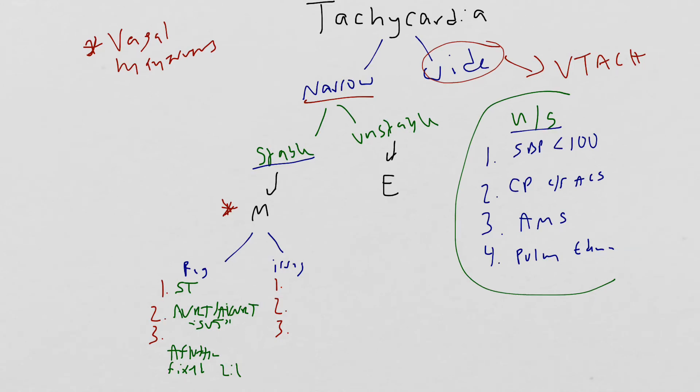In the irregular column, you want to remember AFib, MFAT or multifocal atrial tachycardia, and AFlutter with a variable block. The most common irregular narrow complex tachycardia is going to be AFib. So when in doubt, think about AFib. Multifocal atrial tachycardia is when you have three different P waves. And atrial flutter with a variable block is kind of rare. So don't default to thinking that all irregular narrow complex tachycardias are AFlutter. Think about AFib first.